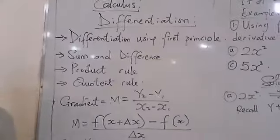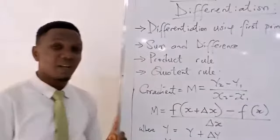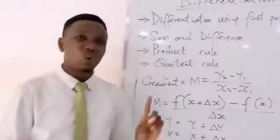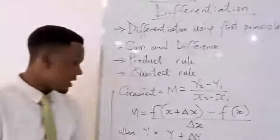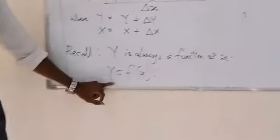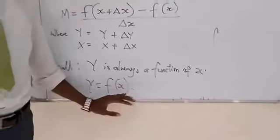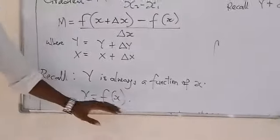Y is always a function of X. I will repeat that because it's very, very important. Y is always a function of X. As we have it here, Y equals to F of X. Y equals to F of X. It is very, very important.